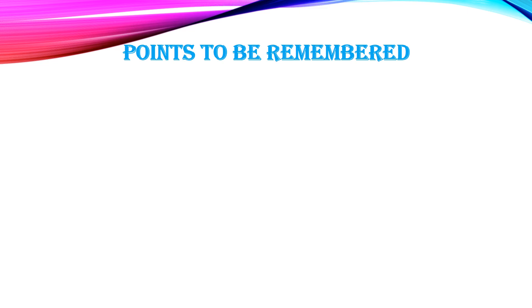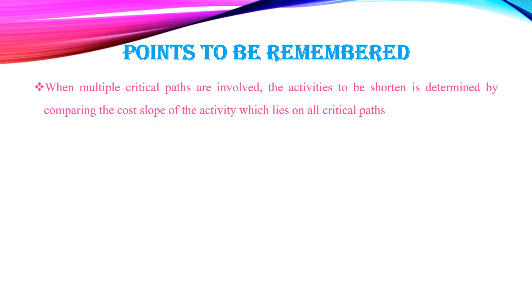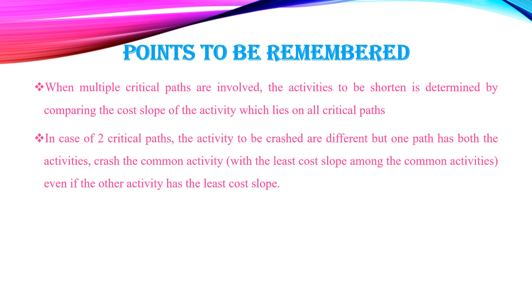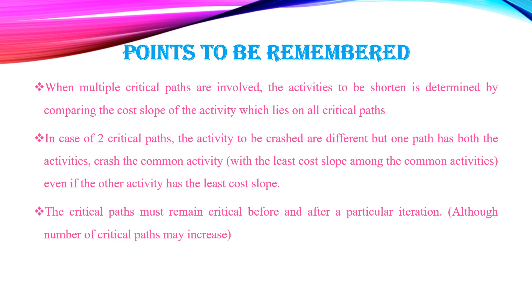Points to remember while crashing the network: When multiple critical paths are involved, the activity to be shortened is determined by comparing the cost slope of the activity lying on all critical paths. If two critical paths exist and activities to be crashed are different but one path has both activities, crash the common activity with the least cost slope. The critical path must remain critical before and after each iteration, although the number of critical paths may increase.